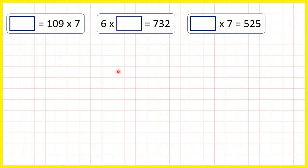Now here we have some missing number multiplications, but for this first question, the missing number is just the answer. That's because it doesn't matter whether the equal sign is at the start or at the end of the calculation like it normally is, we do exactly the same thing. So we just need to work out 109 times 7, so we can use short multiplication.